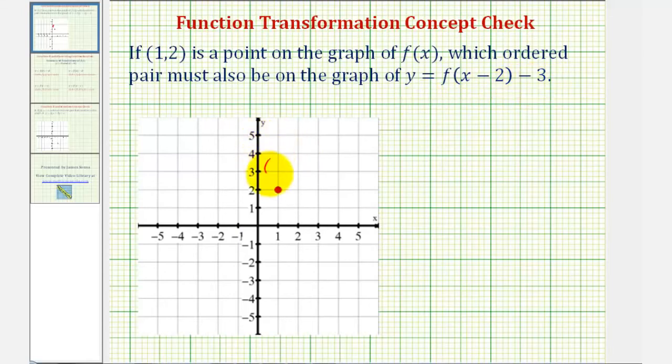So here's the given point (1,2), where x equals one and y equals two. This is a point on our function f(x), therefore we can say that f(1) equals positive two.